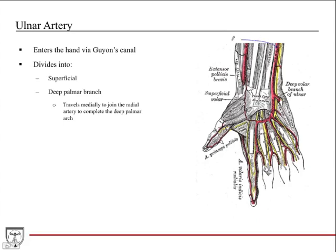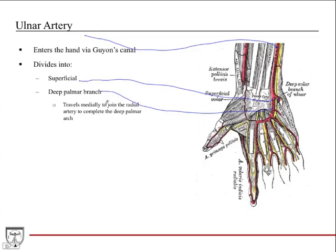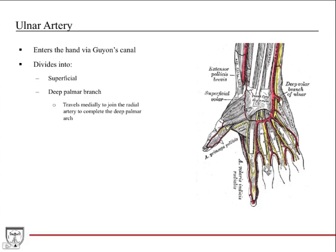Now we'll talk about the ulnar artery. The ulnar artery comes down, it enters Guyon's canal as we talked about, and it divides into two branches: the superficial branch and the deep branch. The deep branch ducks down and dives deep into the hand. The superficial branch continues as the superficial palmar arch. The deep palmar branch travels medially to join the radial artery to complete the deep palmar arch, which is deep to the superficial arch.